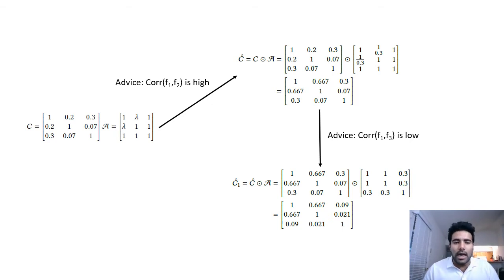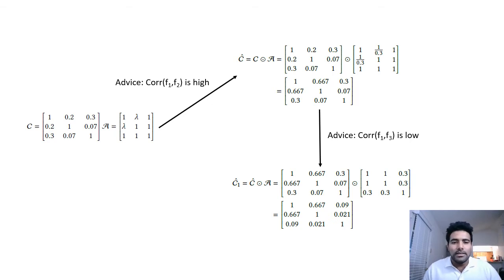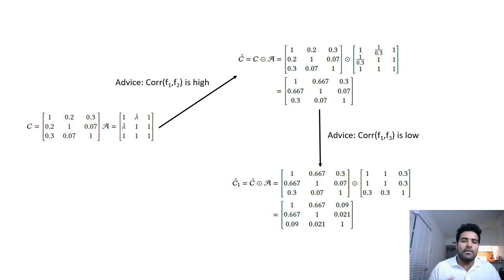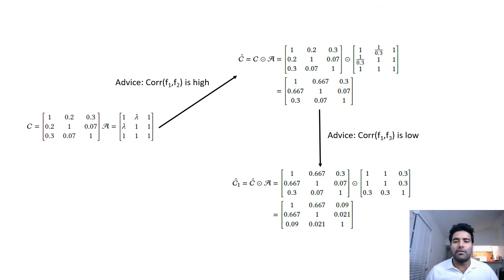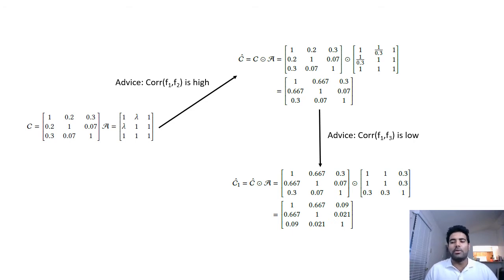For example, C is our initial correlation matrix and A is our advice matrix. Lambda is the factor by which the correlation value is to be augmented, given as either the max of the absolute correlation value or 1 divided by the maximum correlation value. The first advice is that the correlation between feature 1 and feature 2 is high, so we multiply by 1 divided by the max value of 0.3, increasing the value from 0.2 to 0.667. The second advice is that the correlation between feature 1 and feature 3 is low, so we multiply by 0.3 to obtain 0.09.